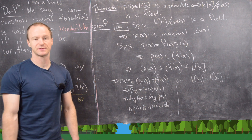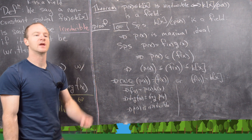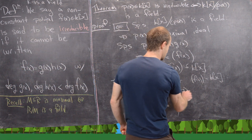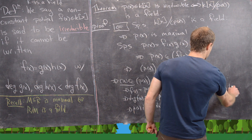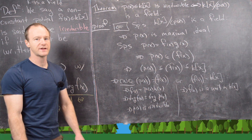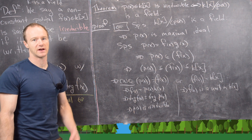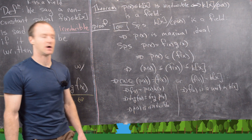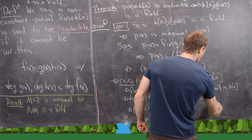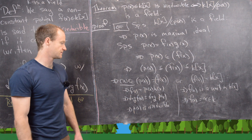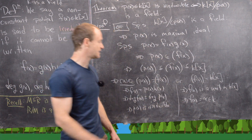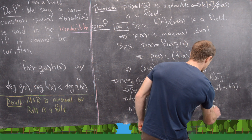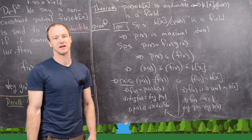Now let's look at the other case, which says the principal ideal generated by f(x) equals k[x]. A principal ideal equals an entire ring if and only if the generator is a unit, so f(x) is a unit in k[x]. The only units in a polynomial ring over a field are the constant polynomials. So f(x) equals some constant alpha in the field, meaning it has degree zero. But then the degree of g(x) equals the degree of p(x), which again gives us that p(x) is an irreducible polynomial.